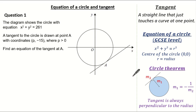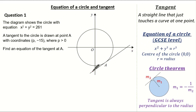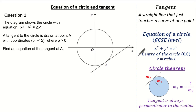Let's put these facts into some exam questions. The question states the diagram shows a circle with the equation x squared plus y squared equals 261. The tangent to the circle is drawn at point A with the coordinates (p, -15), and it states that p is greater than 0. We are asked to find the equation of the tangent at A.